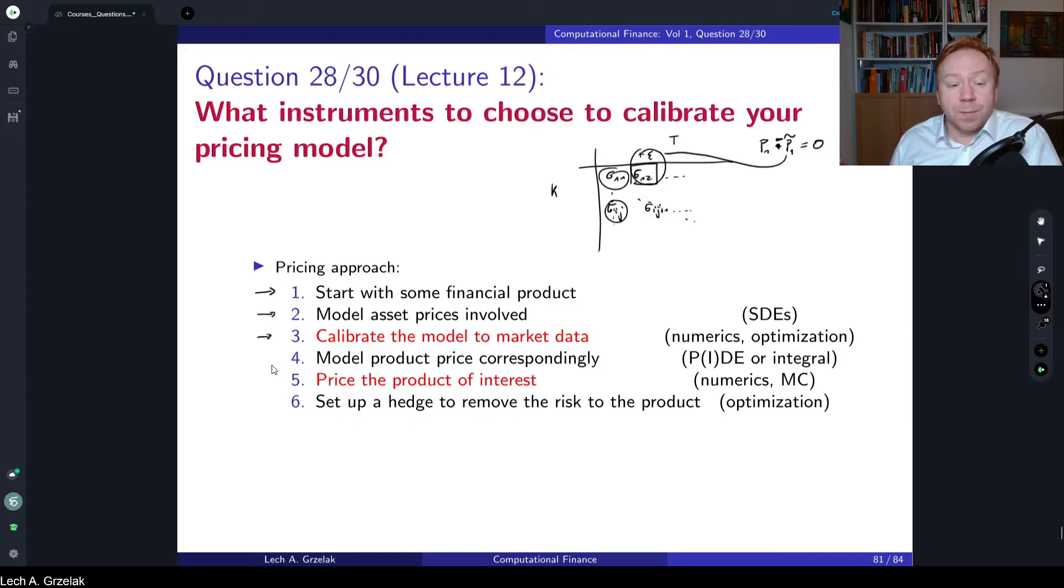Then we have a mathematical part where we model product price according to the stochastic differential equations and derivative. So this means that we choose a method, and depending on the payoff, whether we will solve it with partial differential equations or integral form, Fourier expansions, or maybe some other possible techniques. At this point we don't claim that we always price exotics with Monte Carlo. There could be also other methods, and this is discussed in detail in lecture number 12.